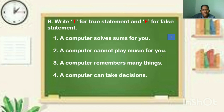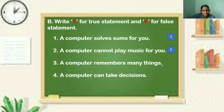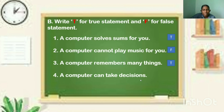Then second one — a computer cannot play music for you. Is it true? No, it's a false statement. Write the letter F. Then third one — a computer remembers many things. Is it true? Yes, it's a true statement. Write T. Then fourth one — a computer can take decisions. It's a false statement. A computer cannot take decisions. Write F.